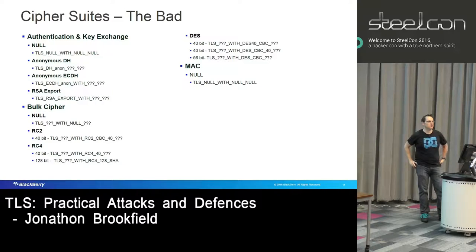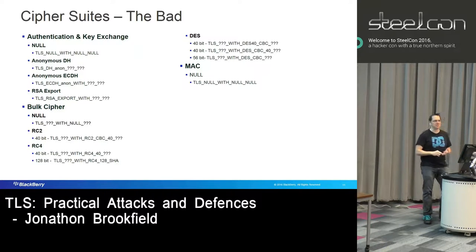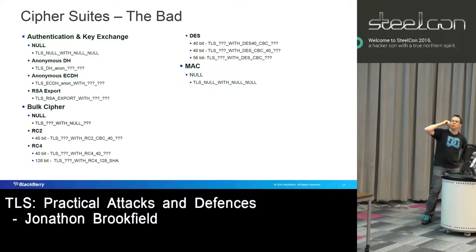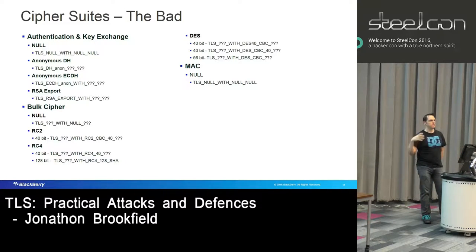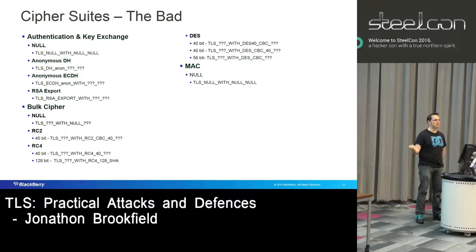Now onto the more interesting cipher suites. There is a cipher suite called the null cipher suite — it means no authentication, no encryption, and no integrity. Most of the time it's disabled, but you might see it once in a while. You also have what are called the anonymous cipher suites — anonymous Diffie-Hellman and anonymous EC Diffie-Hellman. These perform no server authentication. So if you ever see a client offering or a server accepting those cipher suites, you will be able to perform an active man-in-the-middle attack on that connection and neither side will notice.